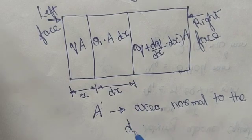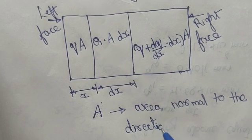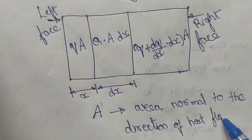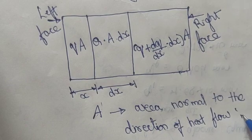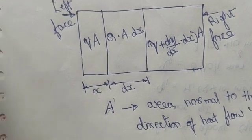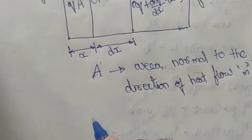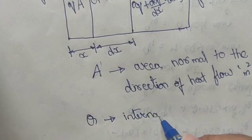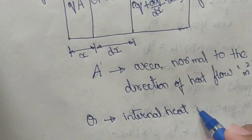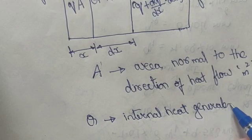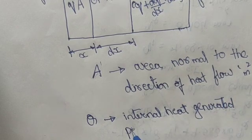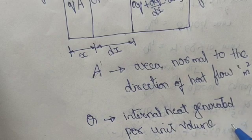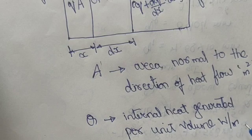Now we will derive the governing equation. Here, A is the normal area — normal to the direction of heat flow — with units of meter squared. Q is the internal heat generated per unit volume, with units of watts per meter cubed.